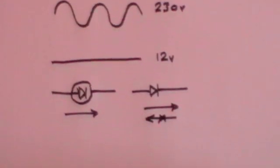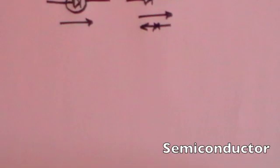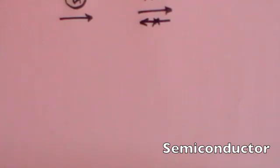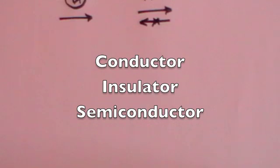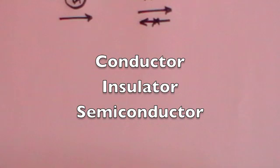How do diodes work? It's all based on things called semiconductors. There are three types of material: conductors, which have lots of free electrons and therefore allow electricity to flow; insulators, which have hardly any free electrons and therefore do not allow a current to flow; and semiconductors, which have a small amount of free electrons and therefore allow a very small current to flow, but nothing like the strength of a conductor.